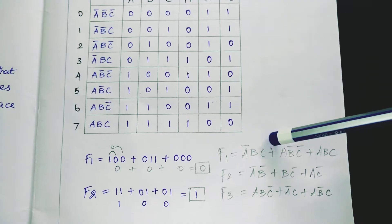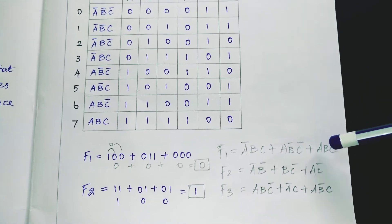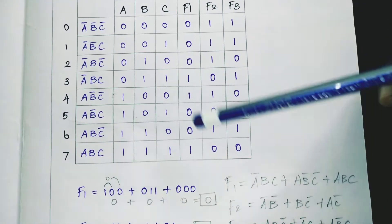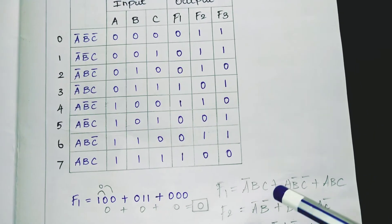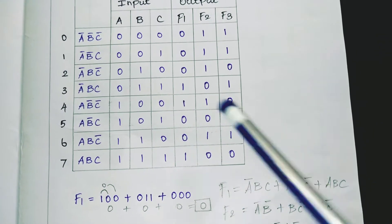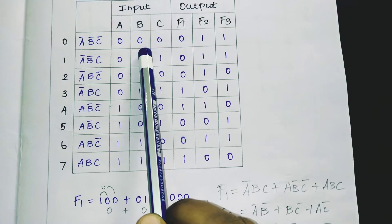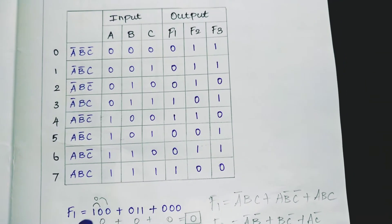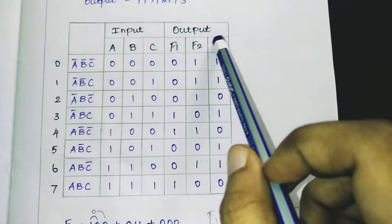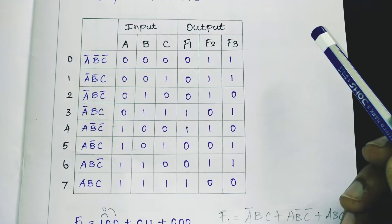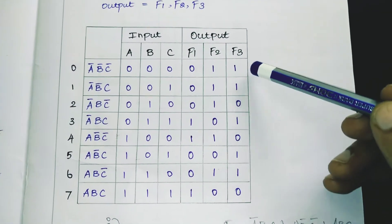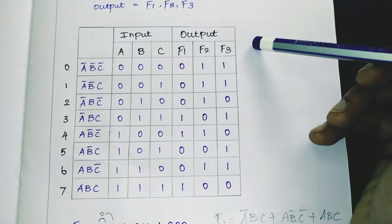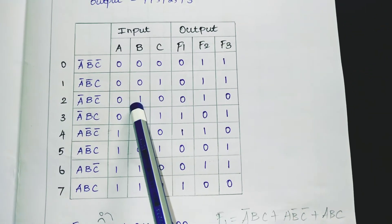F1 is A̅BC + AB̅C̅ + ABC. For the first row where A=0, A̅=1, B=0, C=0: substituting gives 1·0·0 + 0·1·1 + 0·0·0 = 0. Solve F1, F2, F3 for each row by substituting the respective values of A, B, C, and fill the results into the table.